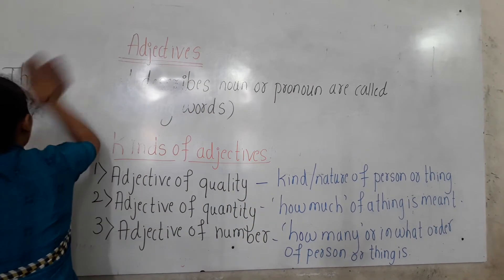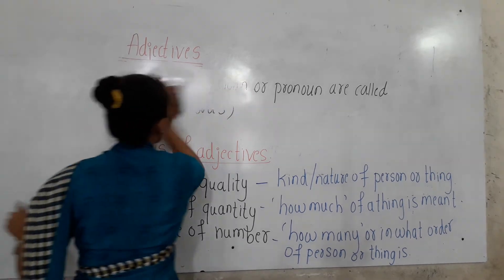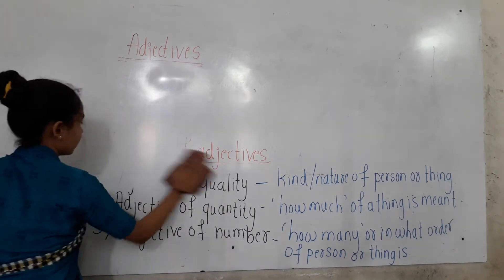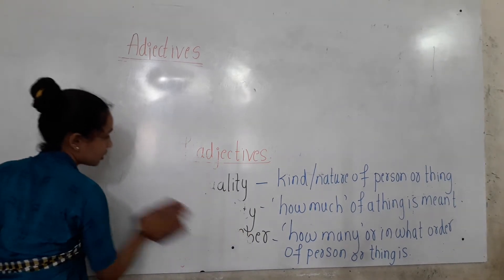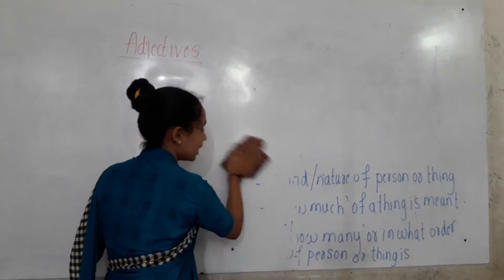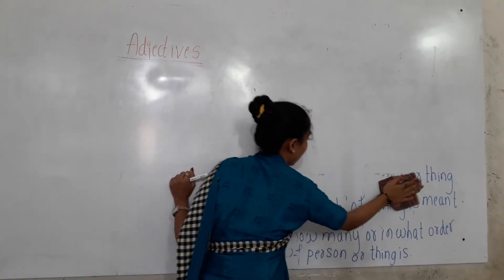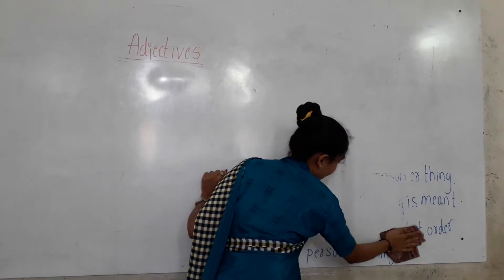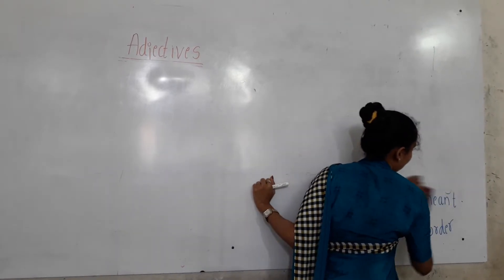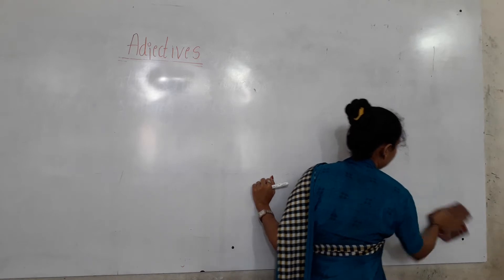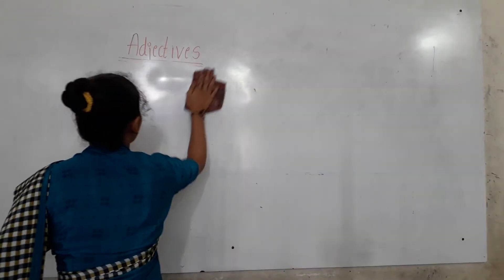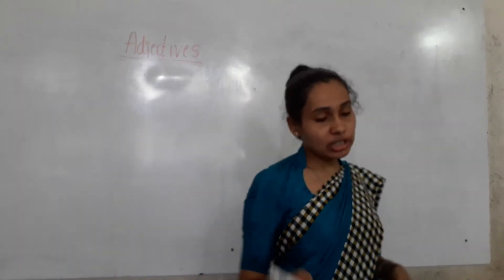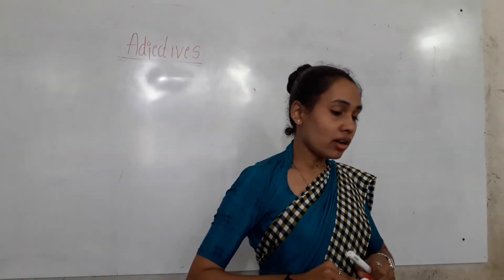What is the meaning of adjective, children? Adjectives are the describing words. They describe noun or pronoun. They add more meaning to the noun or pronoun. Let me write all the questions first, then we will solve one by one.